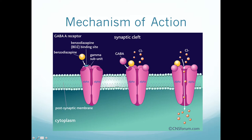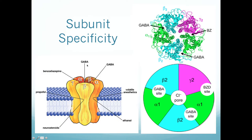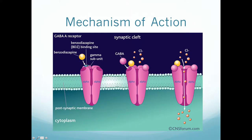Benzodiazepines have their own specific site between the gamma and alpha subunits on the GABA-A receptor. Things that bind to the GABA-A receptor are typical benzodiazepines; things that bind to the GABA-B receptor are called atypical benzodiazepines. A simple way to remember: A = typical, B = atypical.